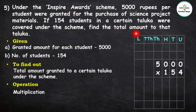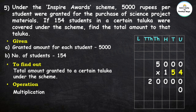First multiply by 4: 4 zeros are 0, 4 zeros are 0, 4 zeros are 0, 4 fives are 20. Now multiply by 5 — 5 is in the tens place, so write 0 in the unit place. 5 zeros are 0, 5 zeros are 0, 5 zeros are 0, 5 fives are 25.